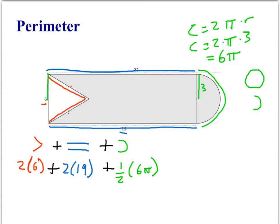And so 2 times 6, of course, is 12. 2 times 19 is 38. And half of 6 pi, of course, is just 3 pi. And so a final answer, an exact answer, we would take 12 and 38, add those together, which would be 50 plus 3 pi.